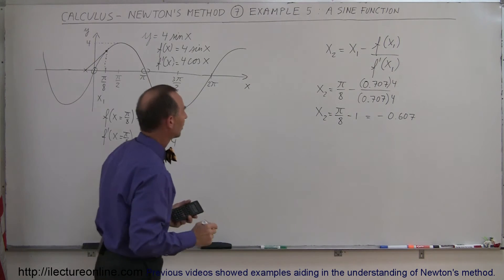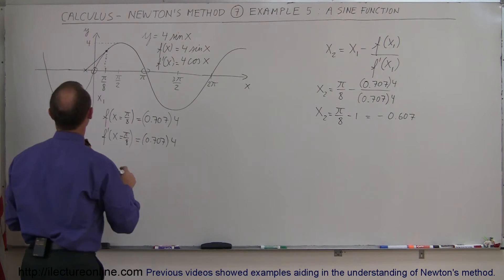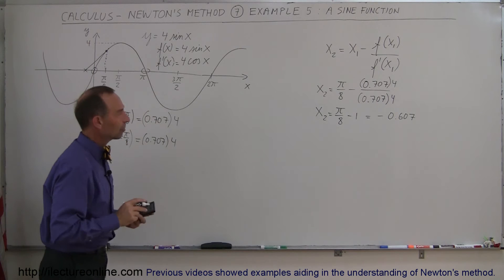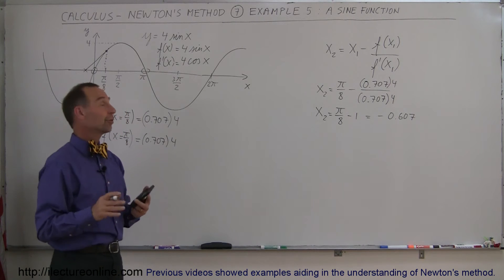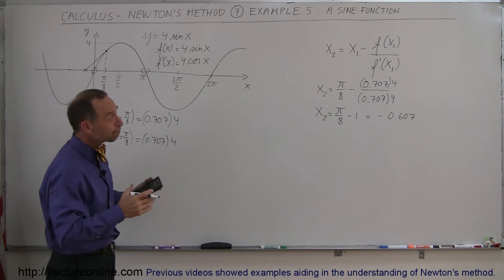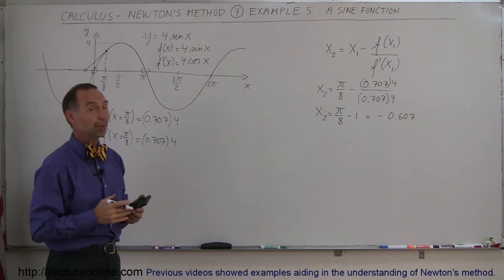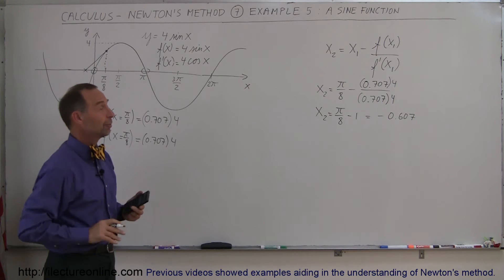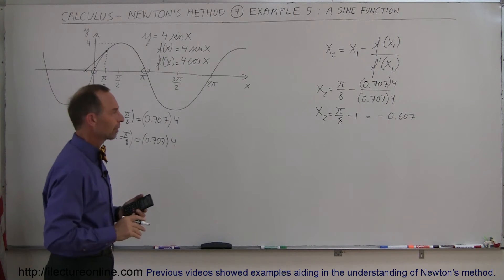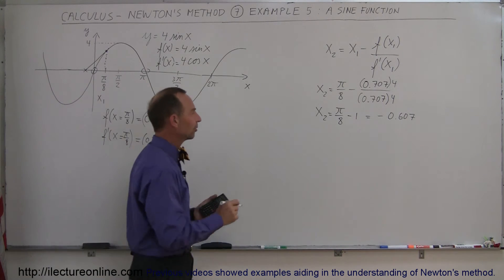So x₂ equals π/8 minus 1, which is approximately −0.607. Now that would be our second point, and it looks like that actually brings us farther away from the root than our first point — but not to panic, I still think this should work.